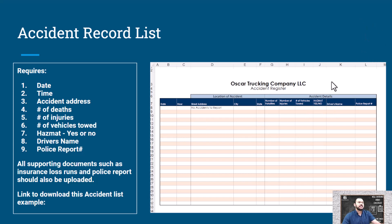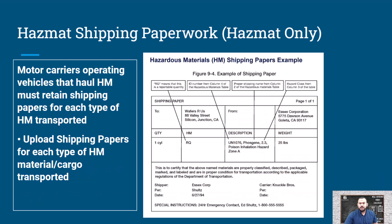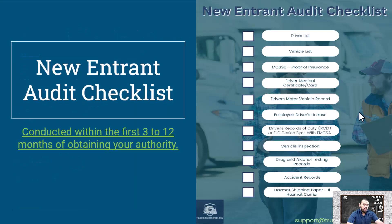The vehicle list, driver list, and accident record list are simple to fill out — you'll knock these out in no time. For hazmat carriers: motor carriers that operate vehicles hauling hazmat must retain shipping papers for each type of hazmat transported. Upload shipping papers for each type of hazmat material or cargo transported for the last 30 days.